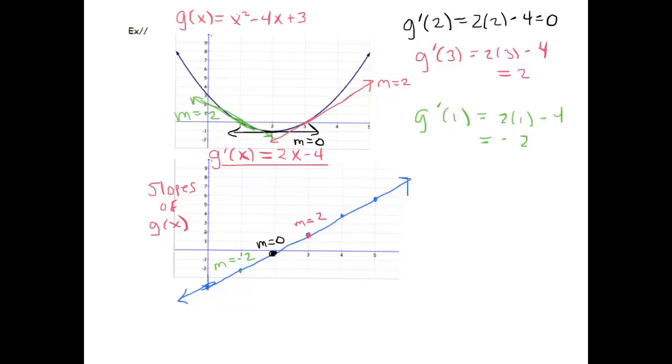Notice that when x is less than 2, the derivative is negative, and that's because this parabola before 2 is decreasing, whereas after 2, if you go to after x = 2, for values bigger than 2, the derivative is positive and that's because the parabola is increasing.